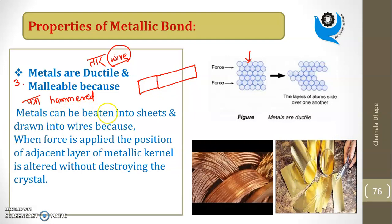You can see here copper wire and aluminum foil. It can be beaten into sheets or drawn into wires. When force is applied, the position of adjacent layers of the metallic kernel is altered without destroying the crystal. That's why metals are ductile and malleable.